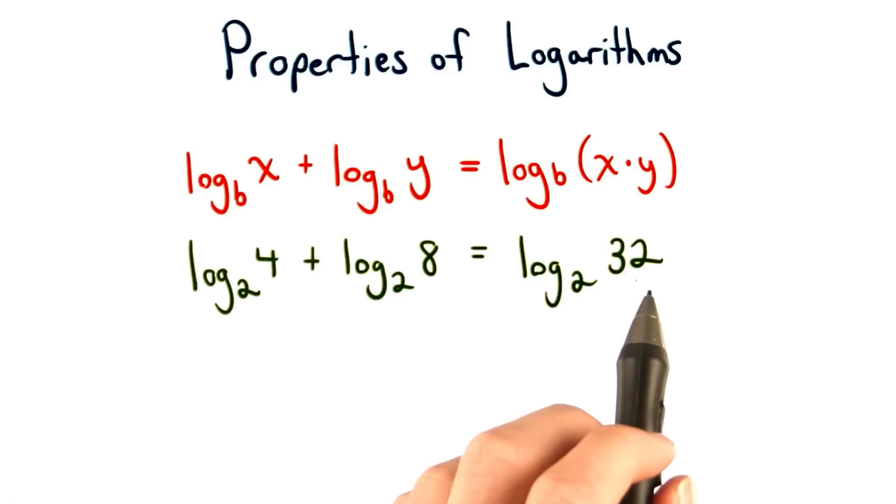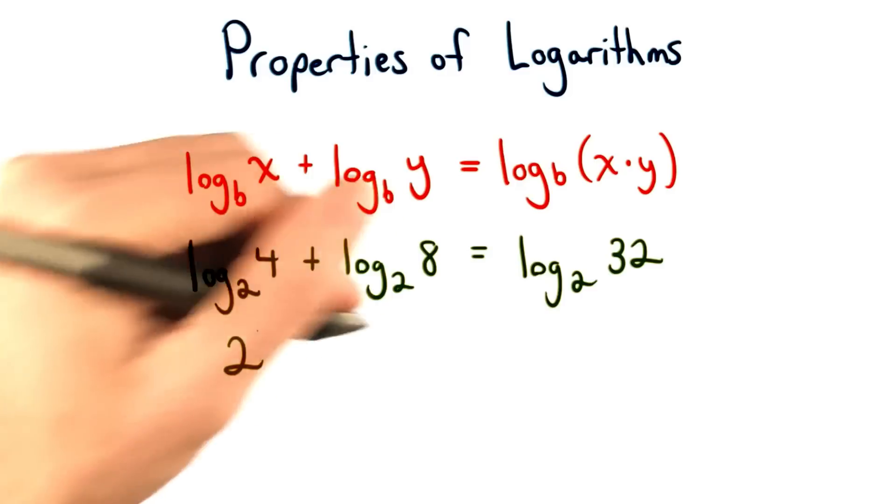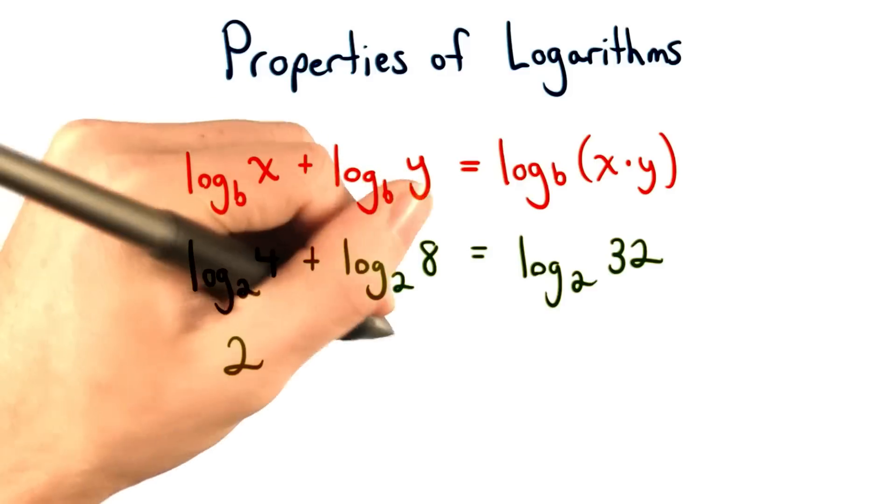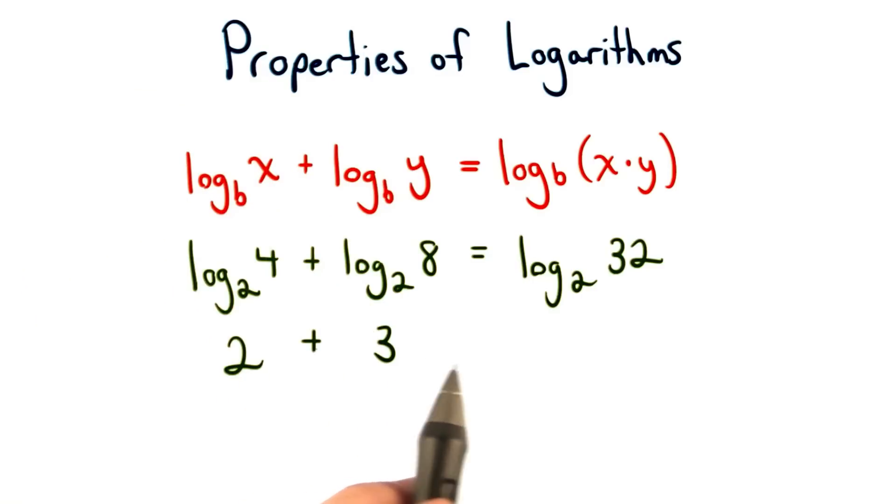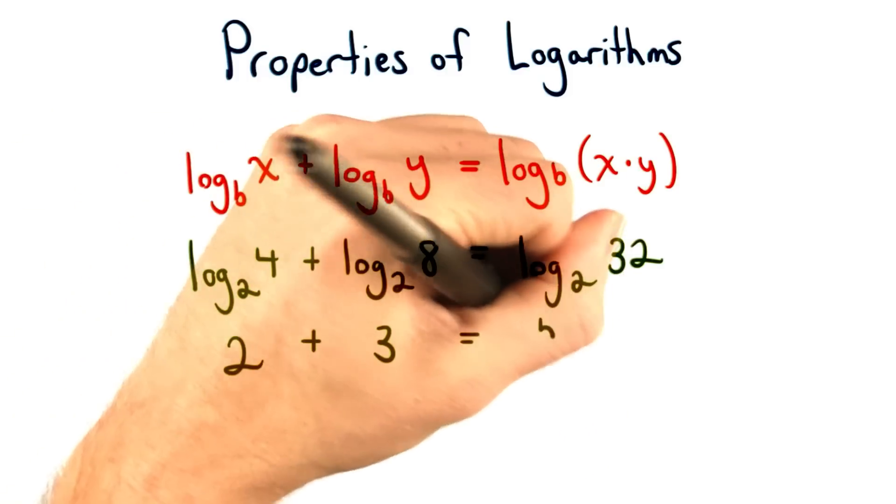Now, this statement should make sense. We know that log 2 of 4 equals 2, and we know the log base 2 of 8 equals 3. So if we add those together, we should get 5. And sure enough, the log base 2 of 32 equals 5.